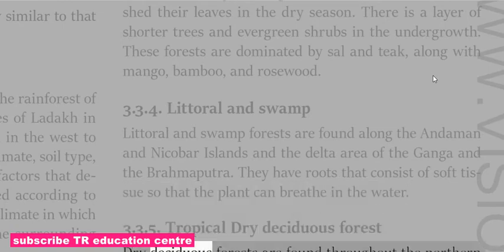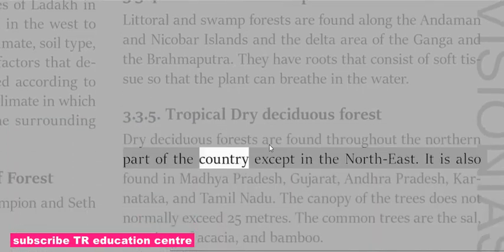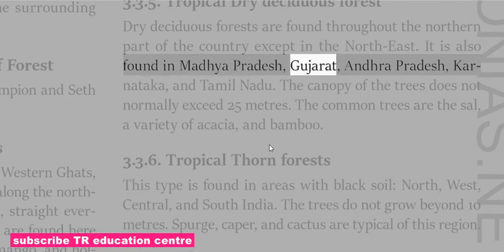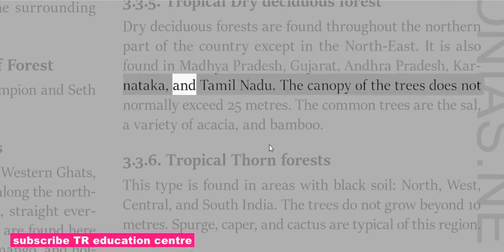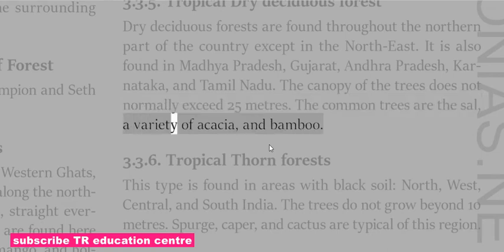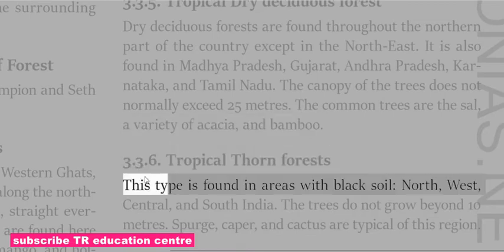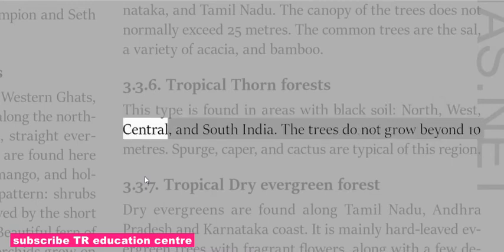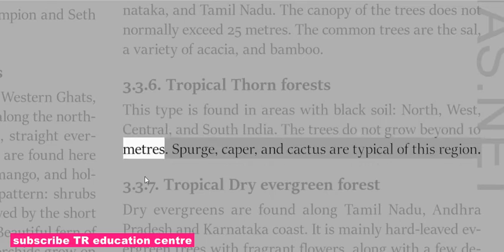Tropical Dry Deciduous Forests are found throughout the northern part of the country except in the northeast, and also in Madhya Pradesh, Gujarat, Andhra Pradesh, Karnataka and Tamil Nadu. The canopy of the trees does not normally exceed 25 meters. Common trees are Dhak, a variety of Acacia, and Bamboo. Tropical Thorn Forests are found in areas with black soil in north, west, central and south India. The trees do not grow beyond 10 meters. Spurge, caper and cactus are typical of this region.